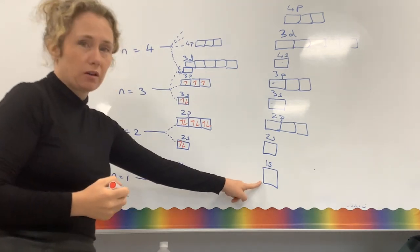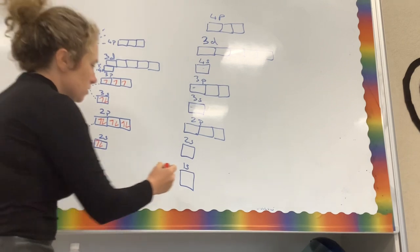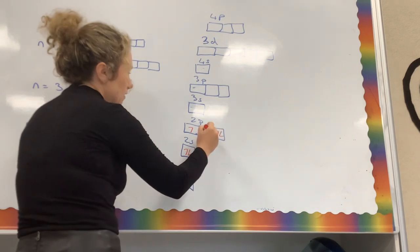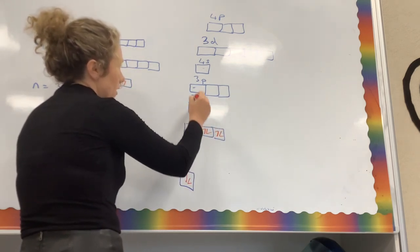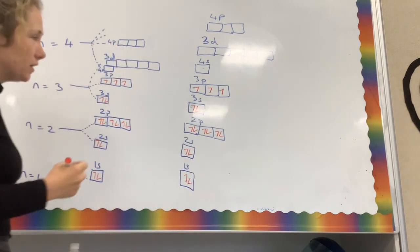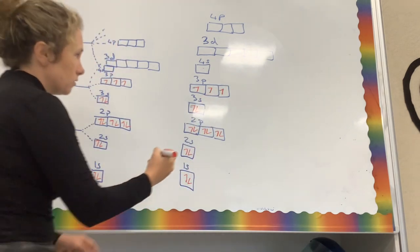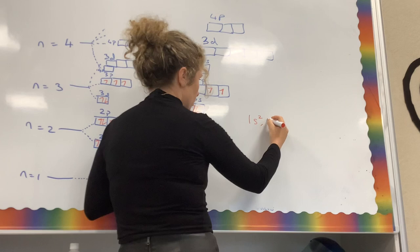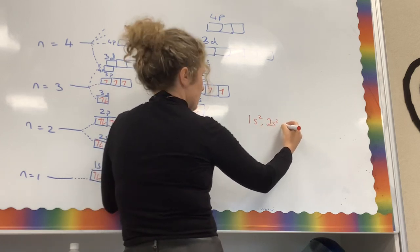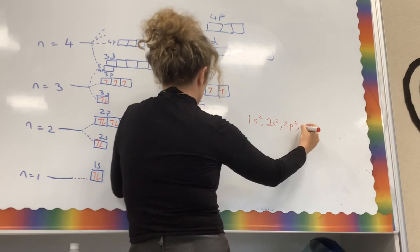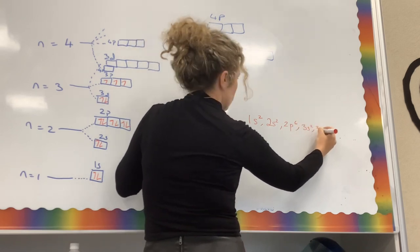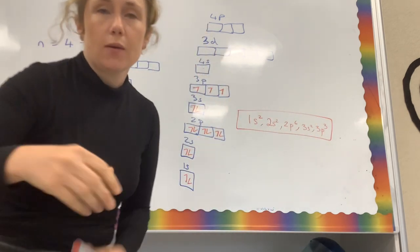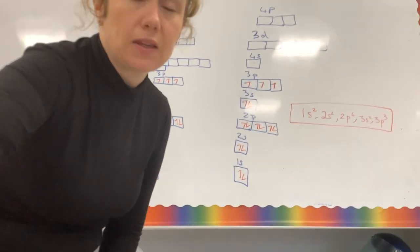Let's write the electron arrangement for phosphorus using the box method as well. The little superscript numbers are the electrons; the big number is the energy level. The electron arrangement is: 1s², 2s², 2p⁶, 3s², 3p³.